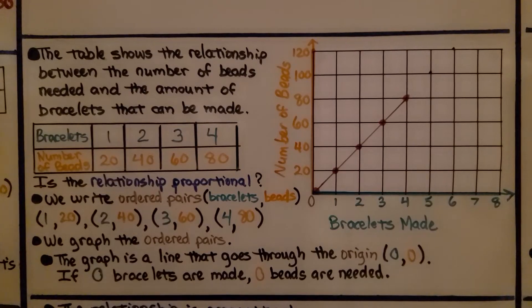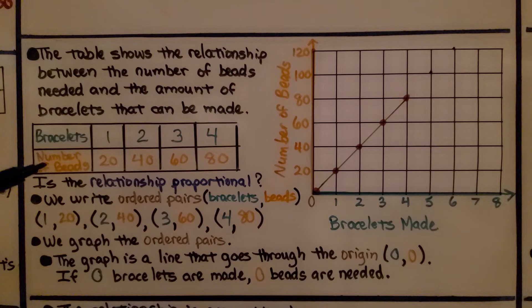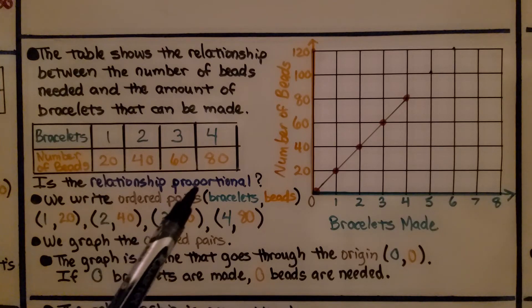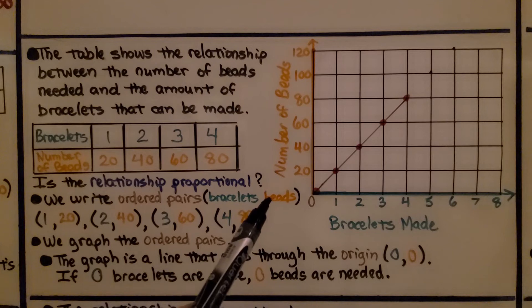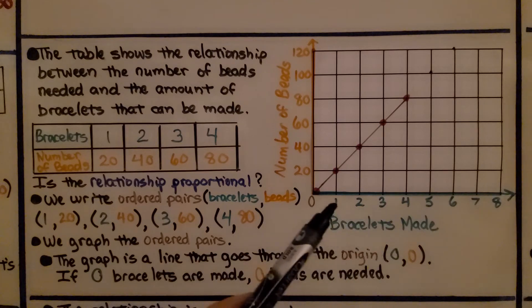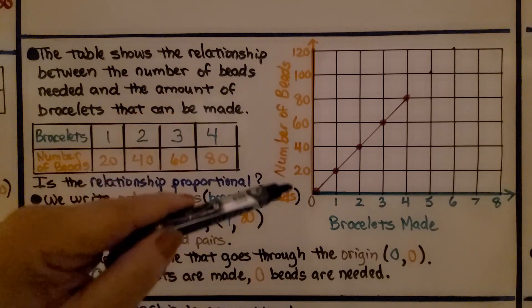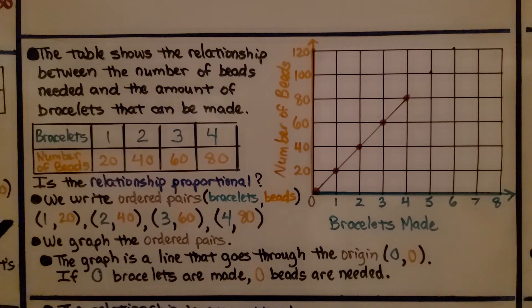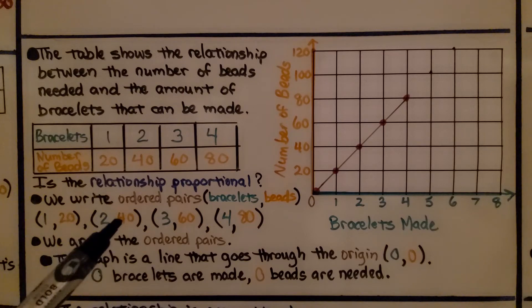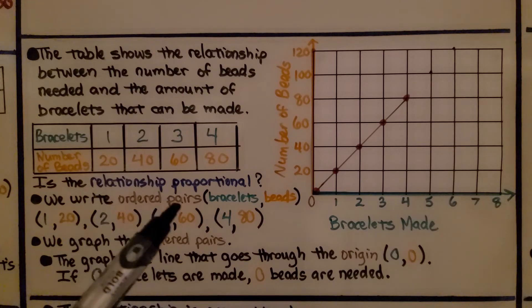The table shows the relationship between the number of beads needed and the number of bracelets that can be made. Is the relationship proportional? We write ordered pairs — bracelets for x, beads for y. On the graph, bracelets is x (the horizontal axis) and number of beads is y (the vertical axis). We have (1, 20), (2, 40), (3, 60), and (4, 80).